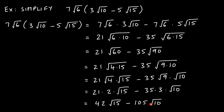The reason we cannot combine like terms here is that even though the indices are the same (both square roots), the radicands are different — 15 versus 10. So this is the final answer; we don't have like terms to combine.